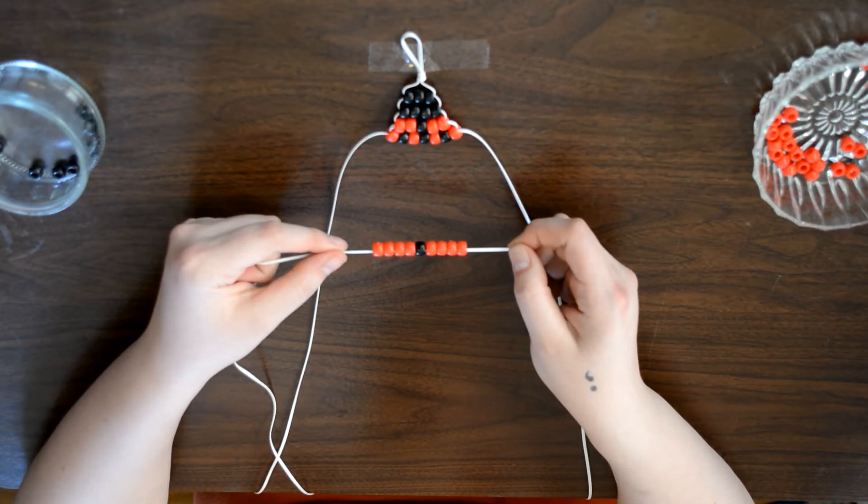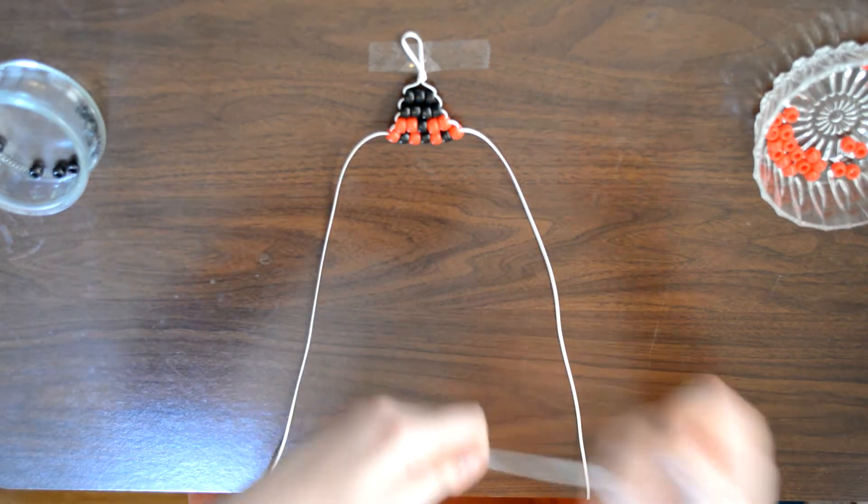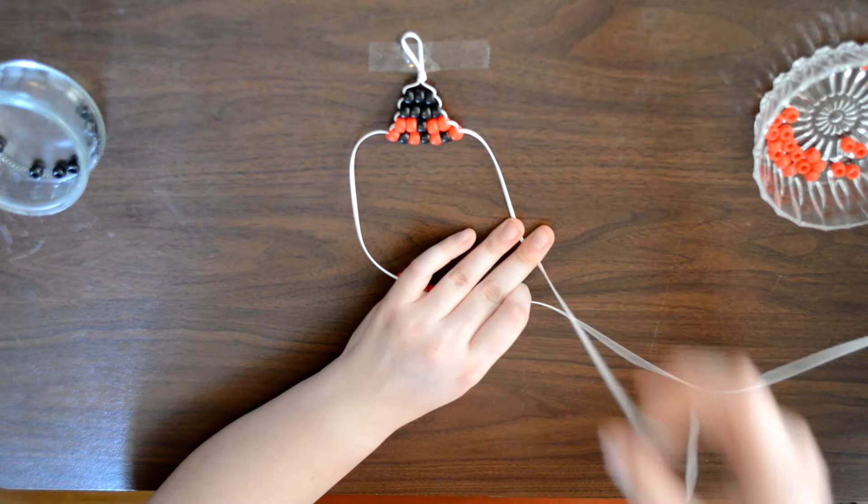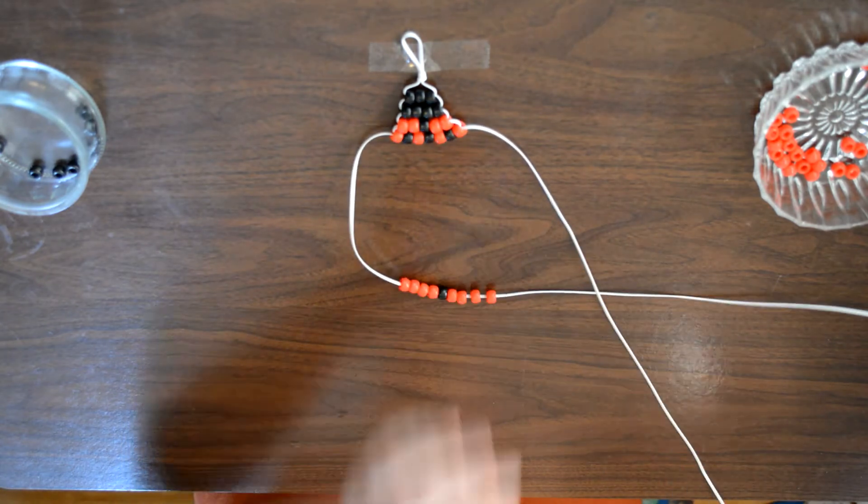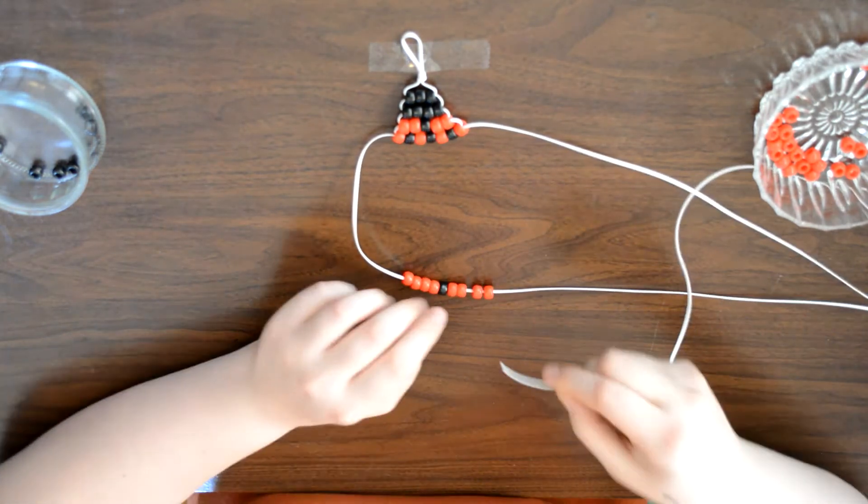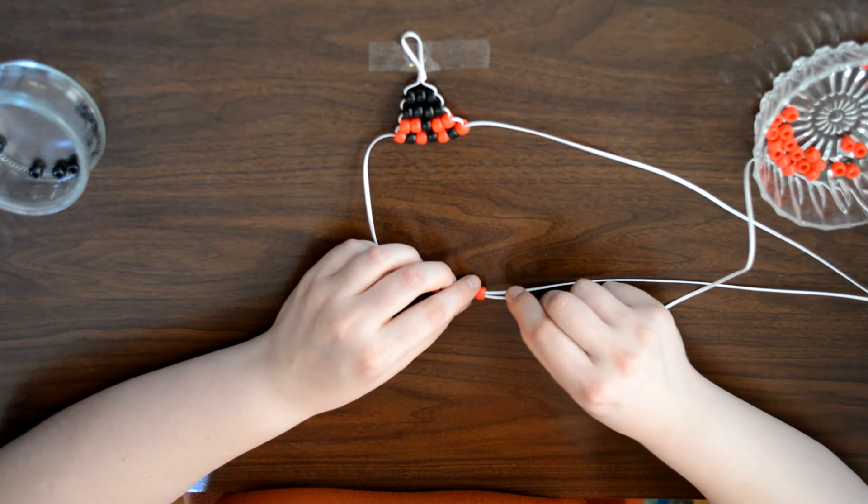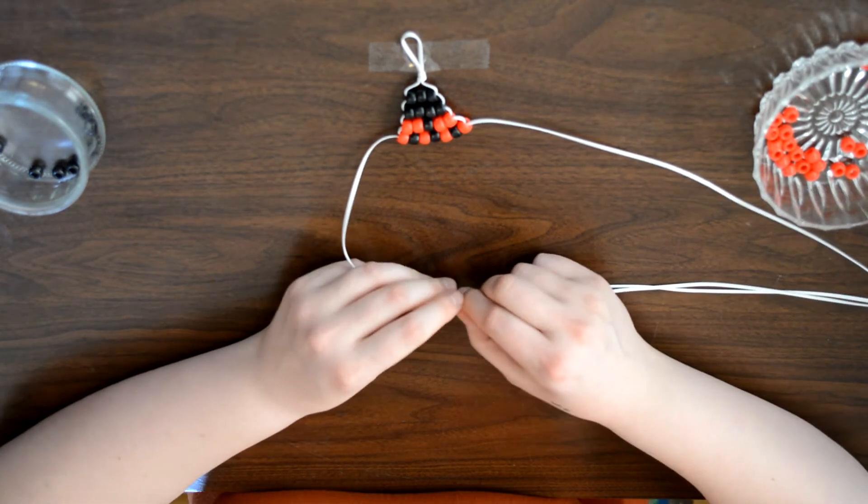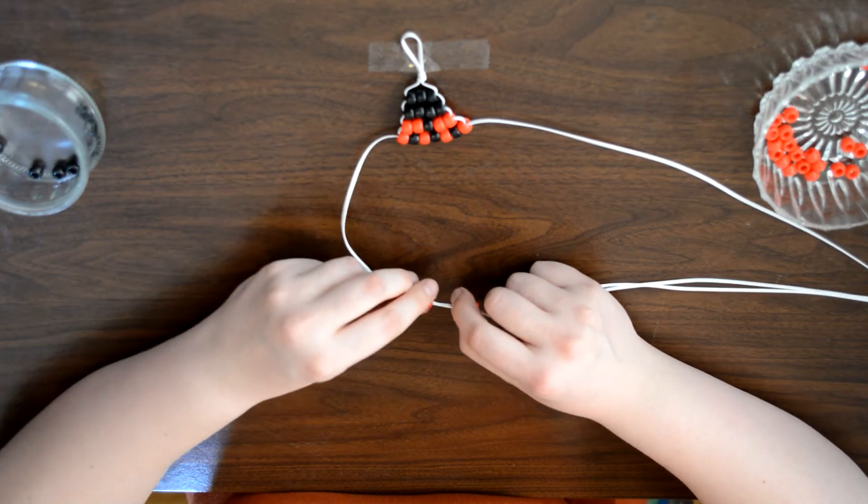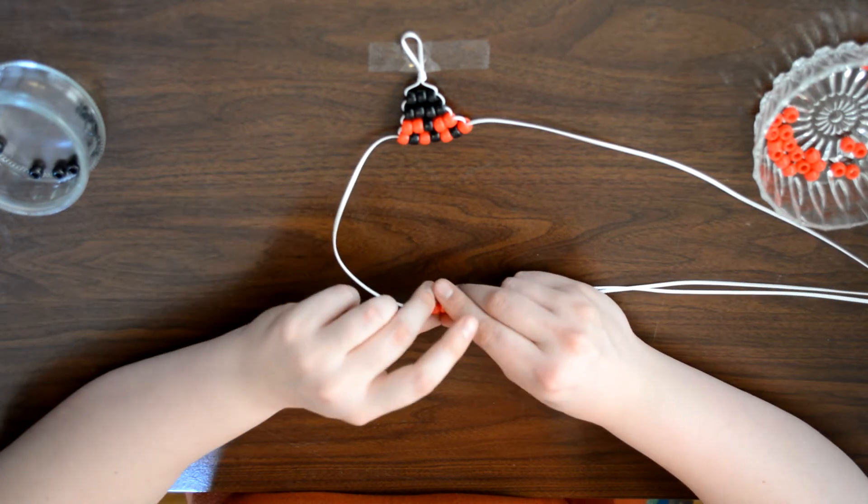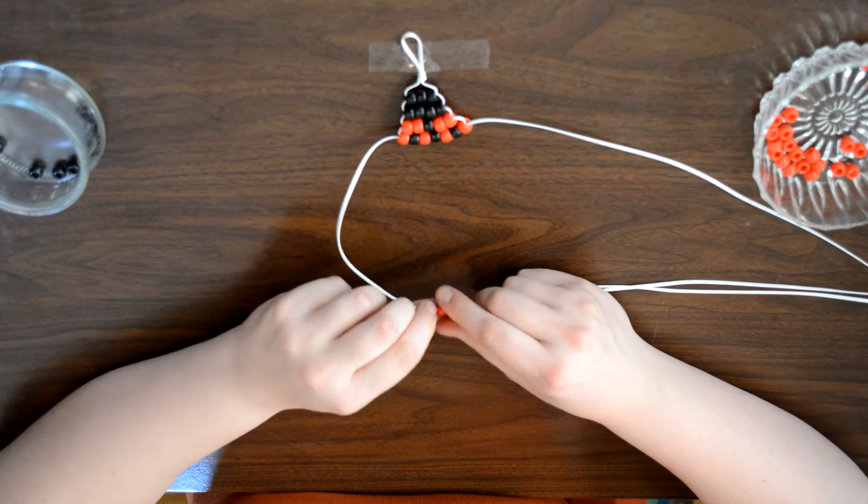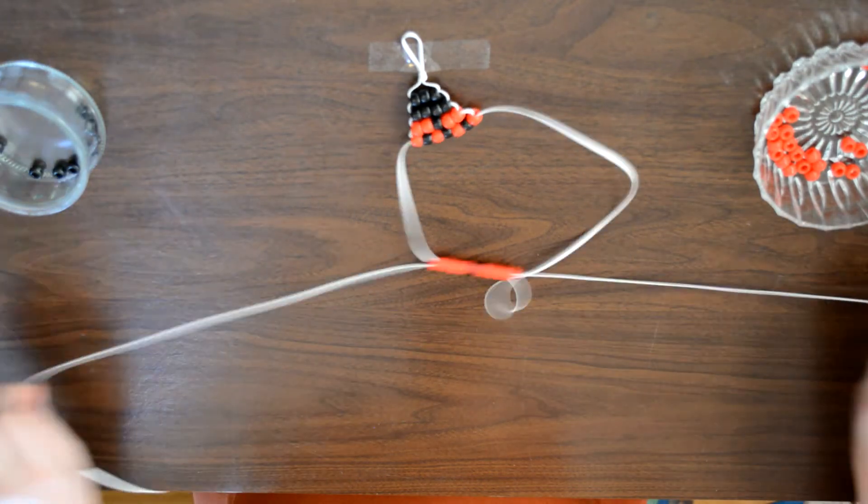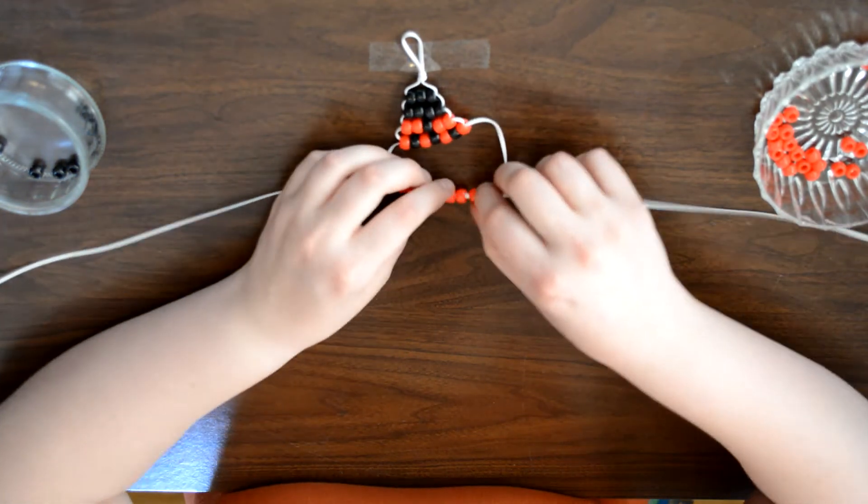So I just pushed them into my hand to hold them a little more steady. So we have four red, one black, and four red. And then we're going to take our right side and go back through all of these beads.